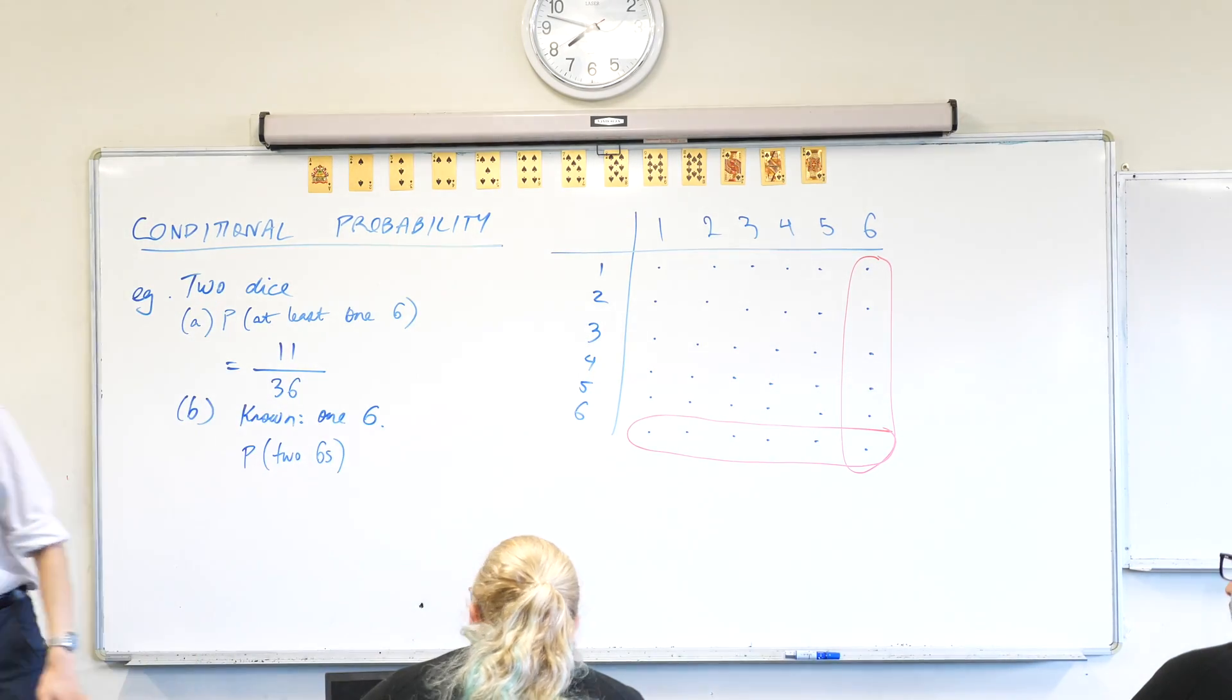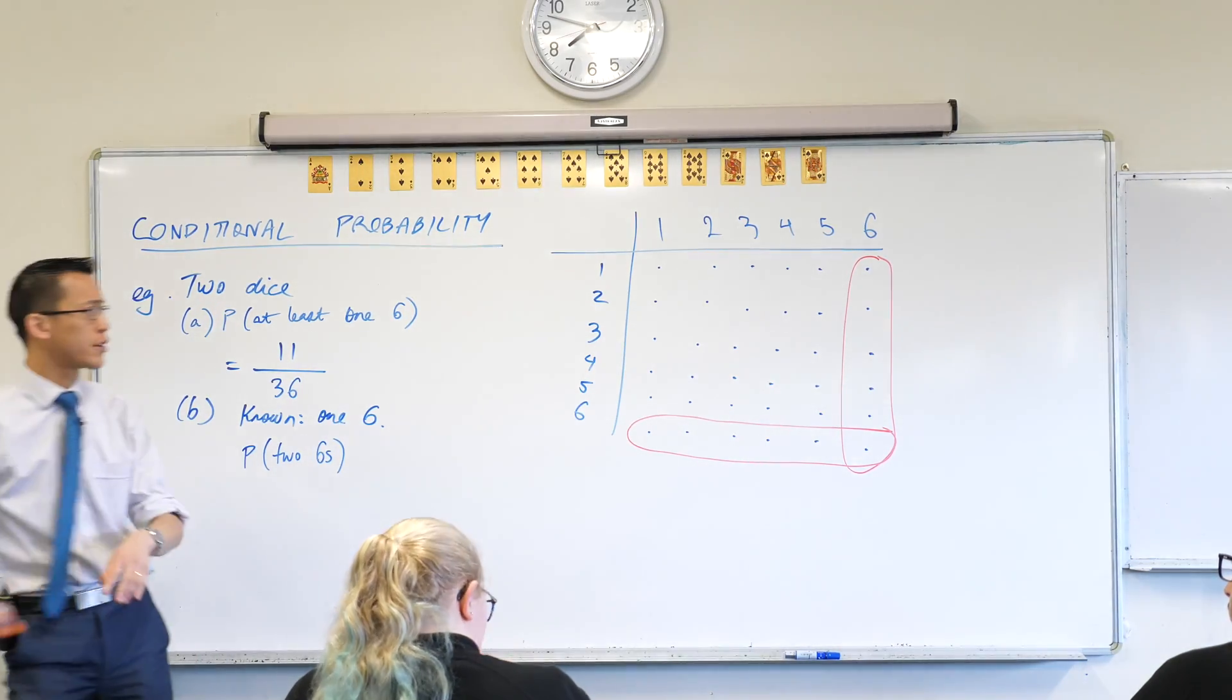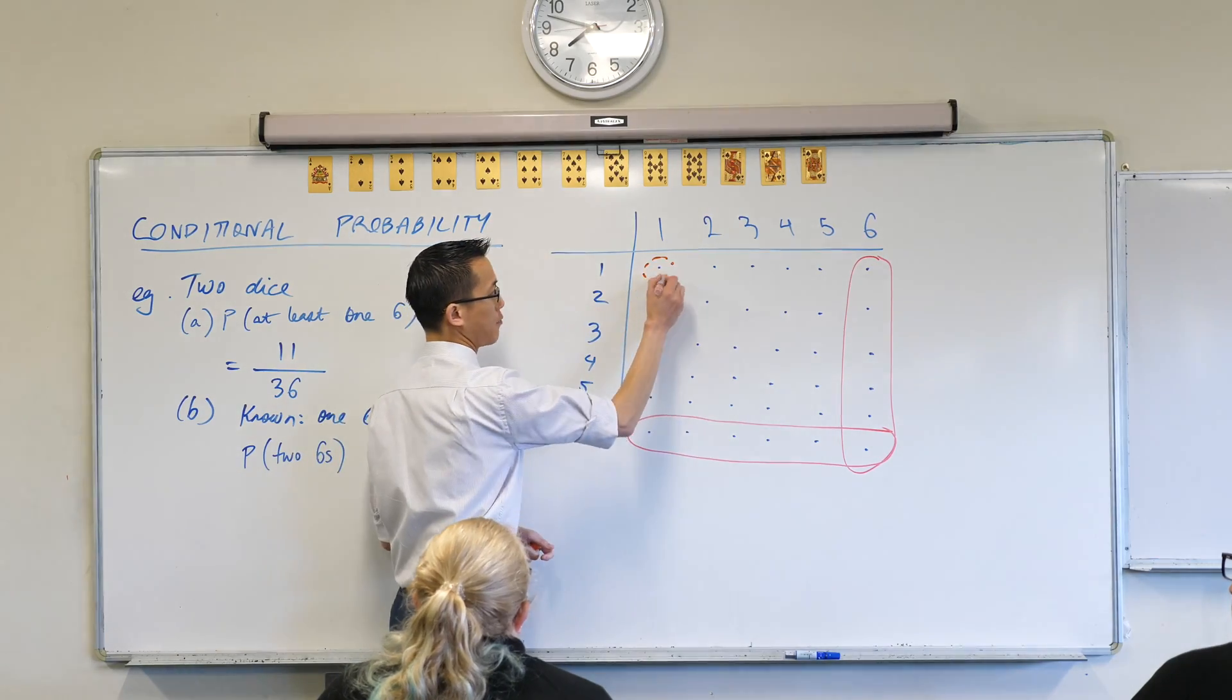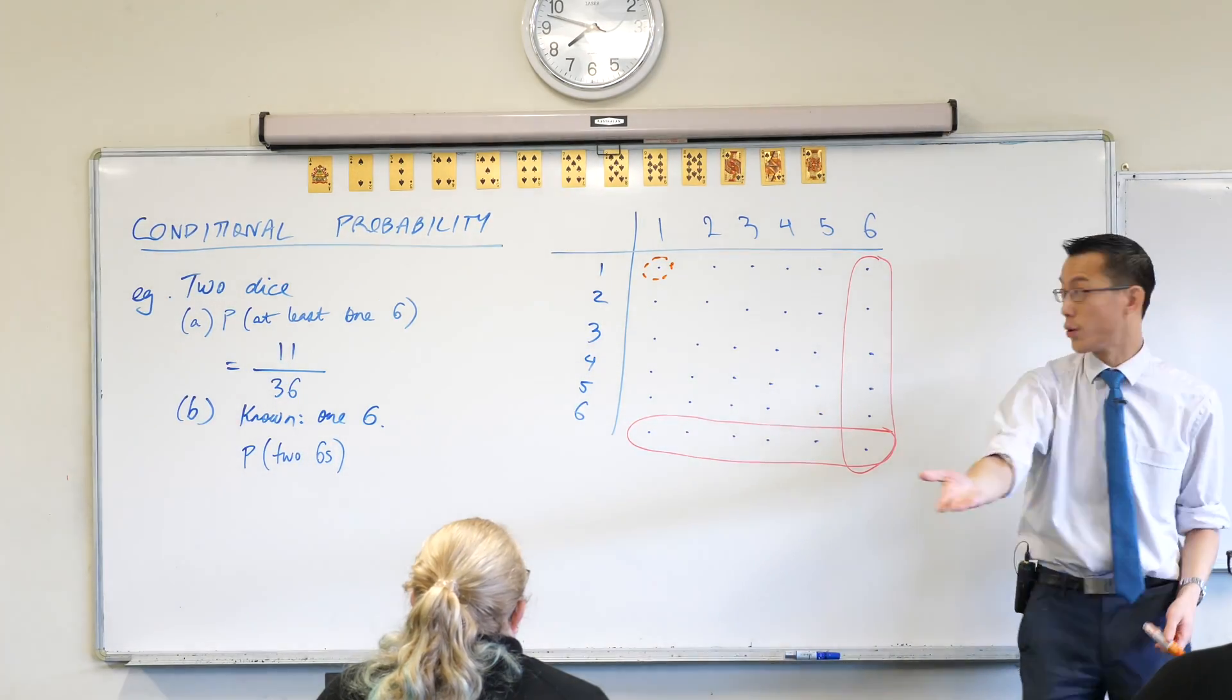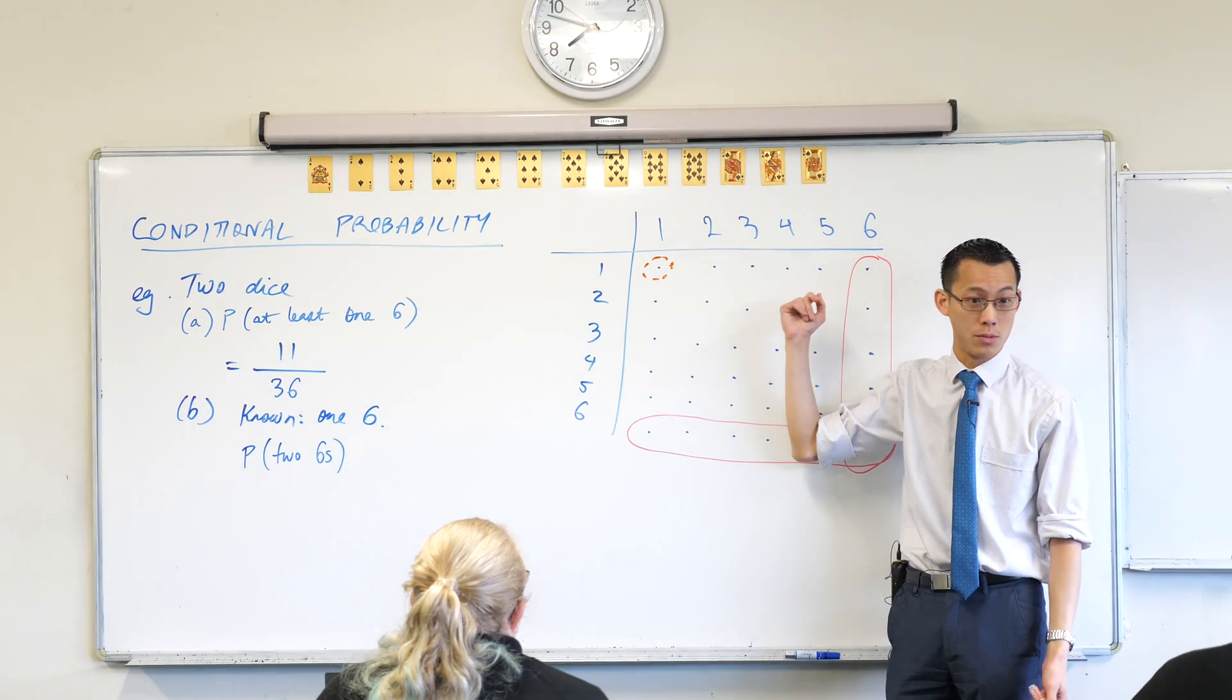No longer can I, for example, say that this guy here is possible. This is impossible, because I'm already holding out one of the sixes for you, so you know they can't both be one. What other ones are impossible?